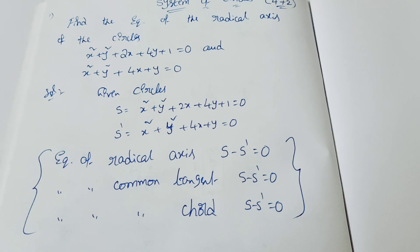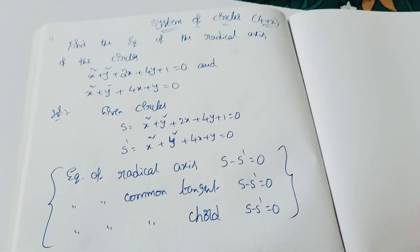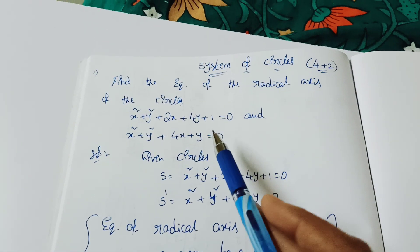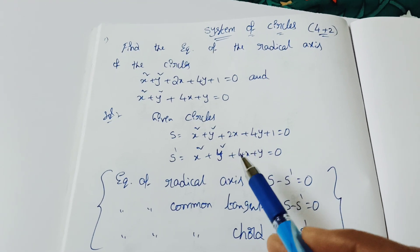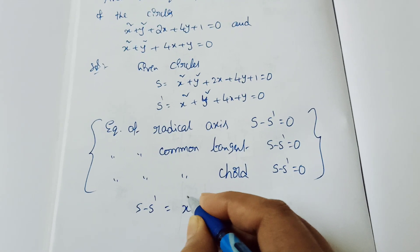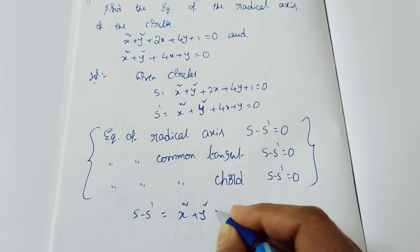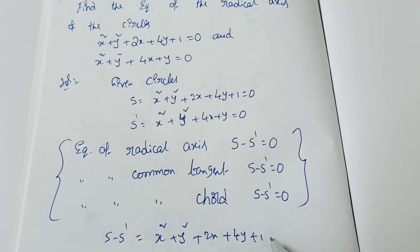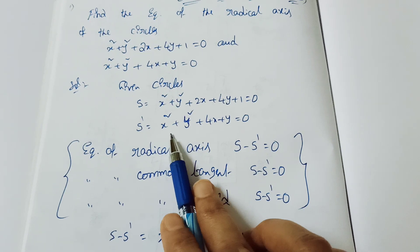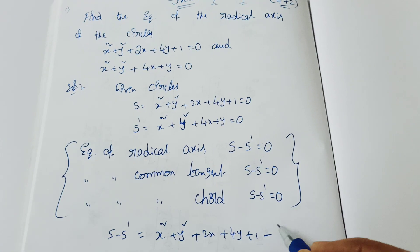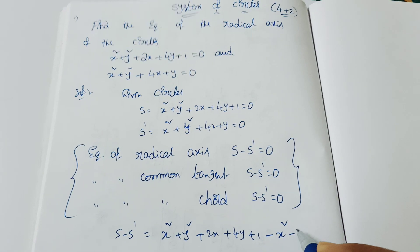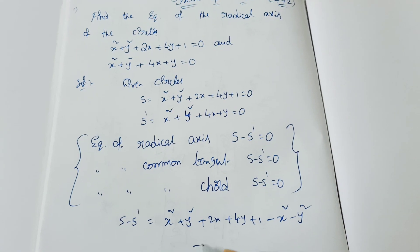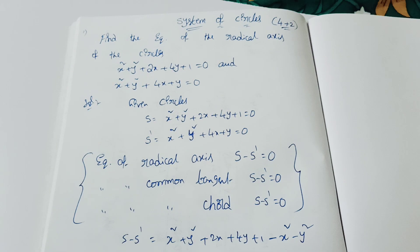The subtraction method is straightforward. S minus S dash equals: the first circle is x² + y² + 2x + 4y + 1, and the second is x² + y² + 4x + y. We subtract; when we bring 2x + 4y + 1 and subtract, we see opposite signs in the simple method. The constant terms: plus 1 minus 1 gives 0, and we get minus 4x minus y.